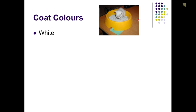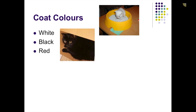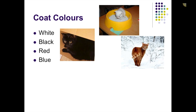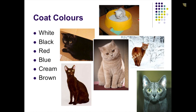The coat colors we have are white, black, red, blue, cream, and brown. White technically isn't a color — they don't necessarily fully understand white occurring in animals. White is known as a mask, so white essentially is masking all other colors. Blue is a dilute black, and cream is a dilute red.